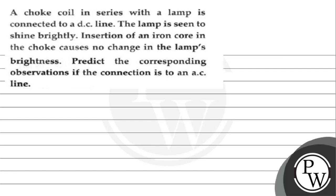A choke coil in series with a lamp is connected to a DC line. The lamp is seen to shine brightly. Insertion of an iron core in the choke causes no change in the lamp's brightness. Predict the corresponding observation if the connection is to an AC line. So we will have to understand...